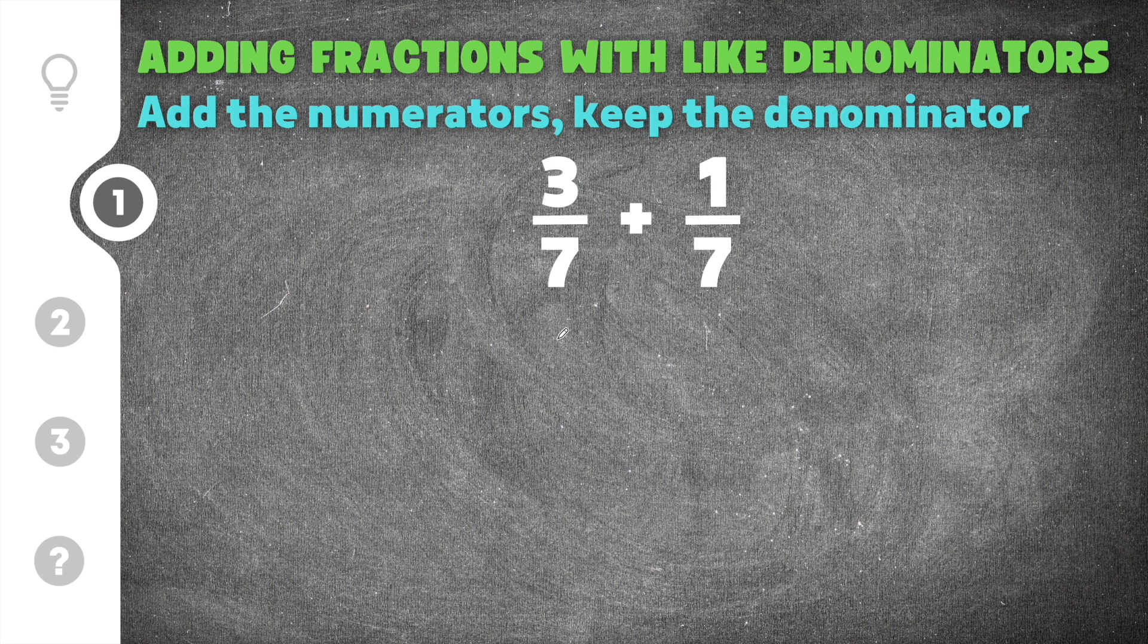All right let's go ahead and get started with some practice problems about how to add fractions with like denominators. Our first problem gives us three sevenths plus one seventh. We've already said that the first step that we have to do is add the numerators together. So we're just going to add three plus one and we're going to get three plus one over the denominator which stays the same, in this case is seven.